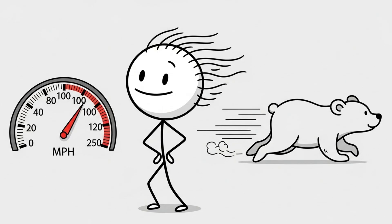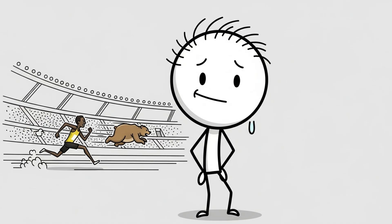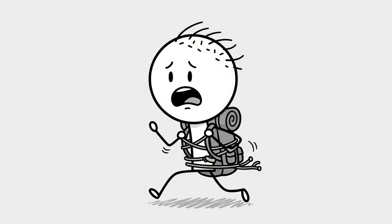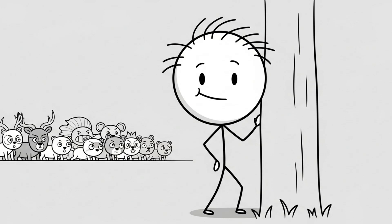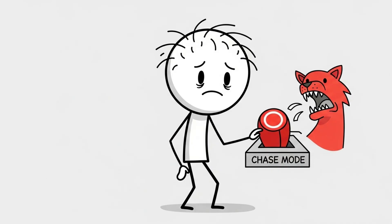Bears can hit 35 miles per hour. That's faster than Usain Bolt, and he doesn't carry camping gear or scream while sprinting. Most animals will instinctively chase fleeing prey. It's built into their system. If you run, you flip their ooh chasey time switch.